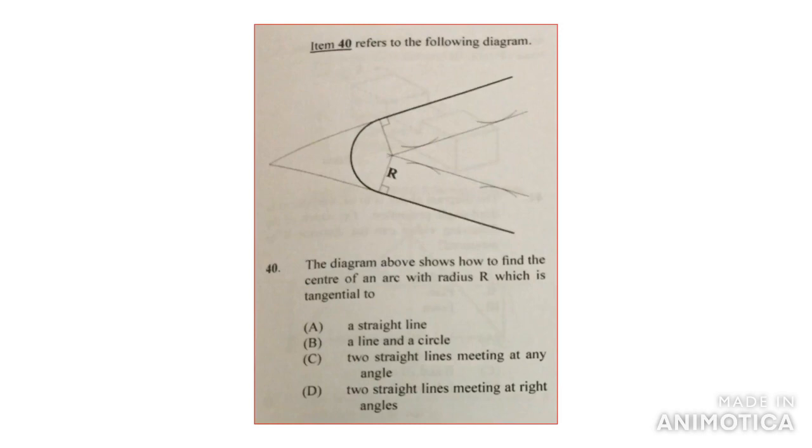The diagram above shows how to find the center of an arc with a radius R, which is tangential to. Let me pull up the laser pointer. The point of the circle or the arc is labeled R.